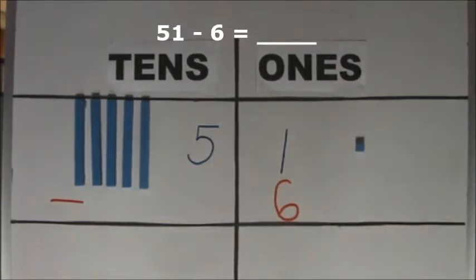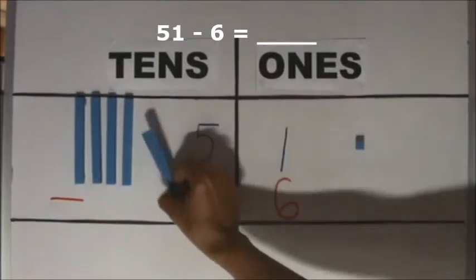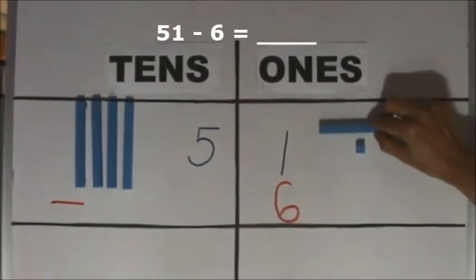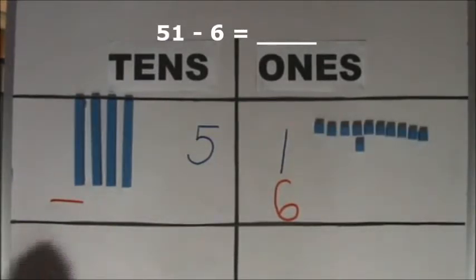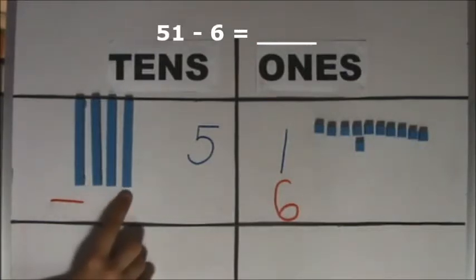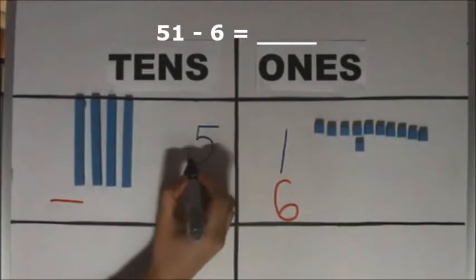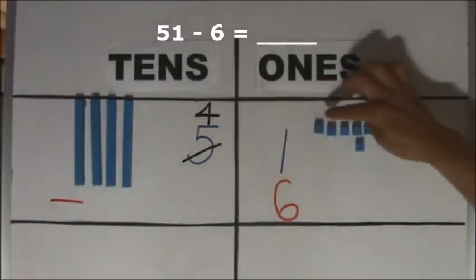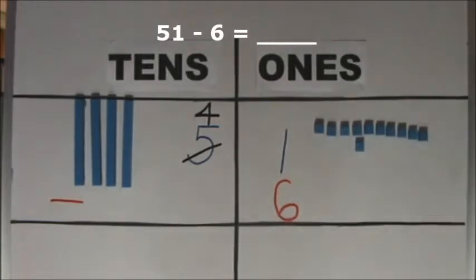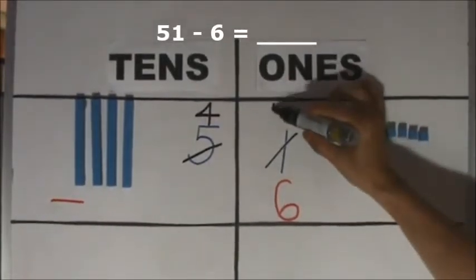There are not enough ones to take away 6 ones. We need to regroup 1 ten for 10 ones. We regroup 1 ten for 10 ones. How many tens do we have left? We have 4 tens left. How many ones do we have now? 10 and 1 make 11. We have 11 ones now.